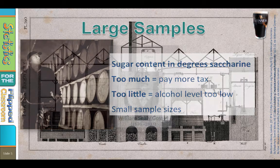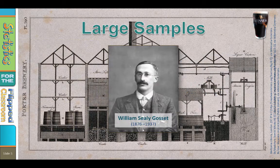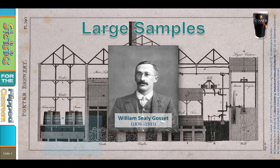This was the challenge facing William Seeley Gossett, a master brewer and scientist at the brewery of Arthur Guinness and Son in Dublin, Ireland. Before I tell you how he solved it, let me explain the problem of using the normal distribution and the z-test.